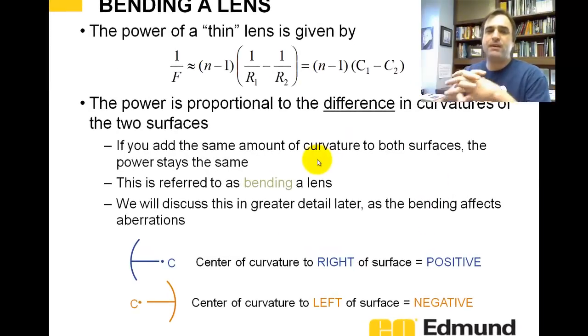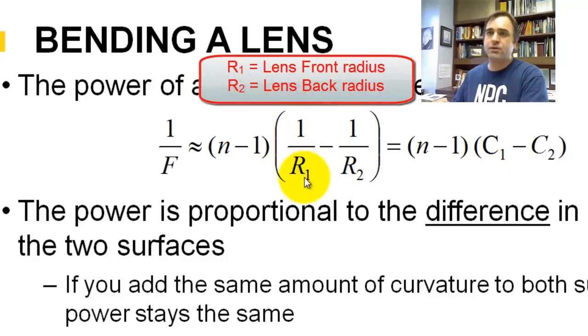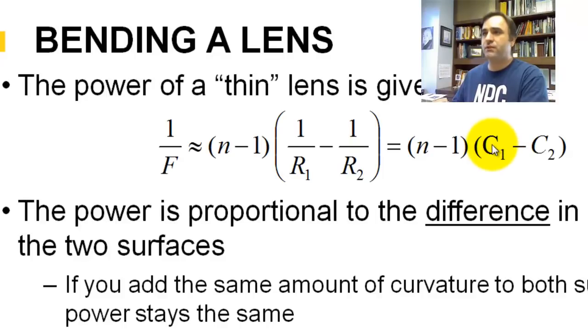So let's talk about bending of a lens. And to do that, I need to discuss the equations for a focal length of the lens. So a focal length, or the inverse of the focal length, is also called power. I should put a power term here. It's proportional to the index minus 1 times the difference between the curvatures. And a curvature is 1 over the radius. So R sub 1 is the front, R sub 2 is the back. If we add a small amount to this curvature and the same amount here, we do not change the focal length. That's called bending. And we'll get into this a little bit more detail. So you can have a certain focal length lens that has all sorts of shapes. And it's all got the same focal length.